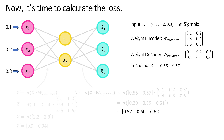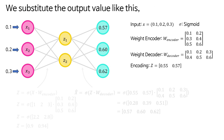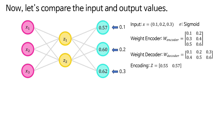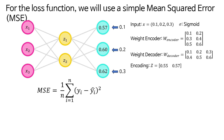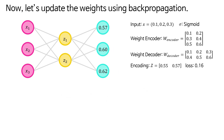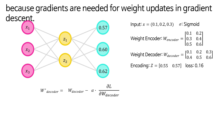Now it's time to calculate the loss. The loss calculation for an autoencoder is very simple. We substitute the output value and arrange the input value. Let's compare the input and output values. For the loss function, we will use a simple mean squared error. The loss value comes out to 0.16. Now let's update the weights using backpropagation. First, we will calculate the gradient of the decoder weights, because gradients are needed for weight updates in gradient descent.